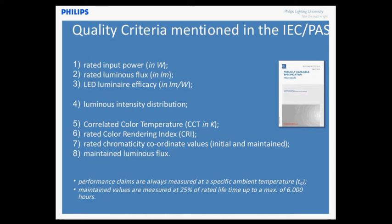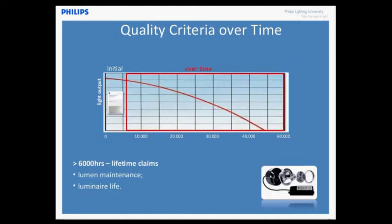That's on the initial quality criteria, but there's also a long period over time and you should also discuss what quality criteria you should take into account then. Currently, what you see with respect to the performance of LED luminaires is that people are taking into account the lumen maintenance, but you should also take into account the luminaire life. The lumen maintenance is the light output - due to aging, the light output will decrease. That's a very natural thing, and that's what we call lumen maintenance or lumen depreciation - those are two terms often used for that.